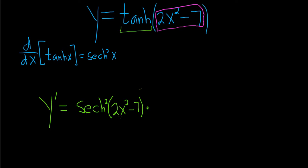So the derivative of 2x squared minus 7 is just 4x using the power rule. 2 times 2 is 4 and you subtract 1, and the derivative of 7 is 0.